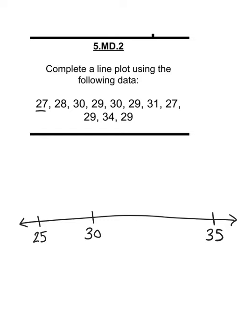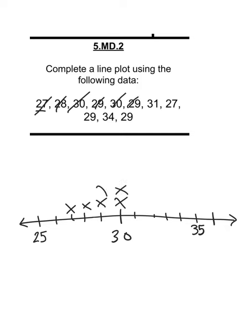Wait, I didn't put that in the right place. If I have a multiple of five or a multiple of 10 at the beginning and the end, it just makes it easier for me to see what my intervals are going to be. I guess that's really why I do it that way. 26, 27, 28, 29, 30, 31, 32, 33, 34, 35. Okay, let me fix that. Okay, let's start. 27, 28, 30, 29, 33, 33, 29, 31, 27, 29, 34, 29.